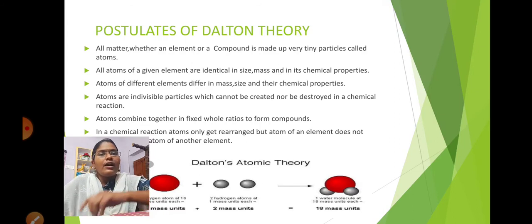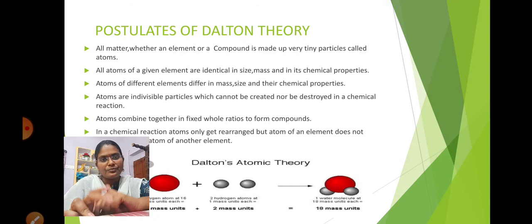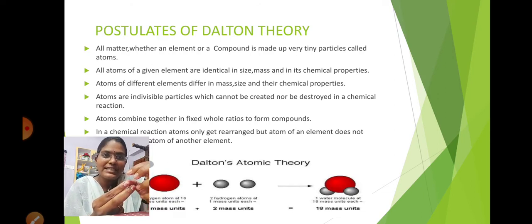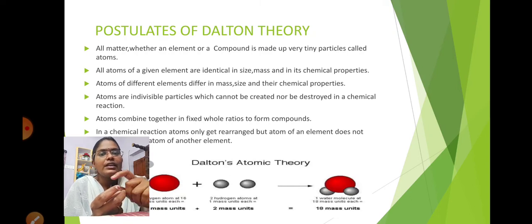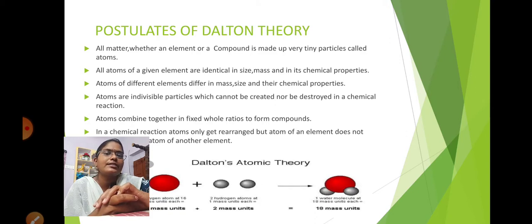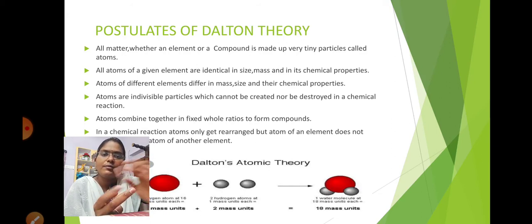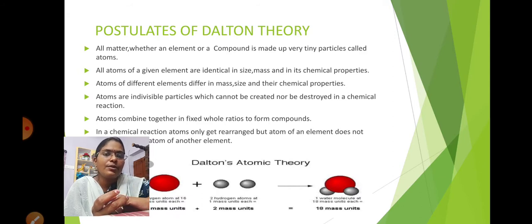For example, if we compare ferrous and sulfur, ferrous differs from sulfur in mass, size, and chemical properties. Atoms of different elements differ in size and mass. This was the second postulate of Dalton's theory.